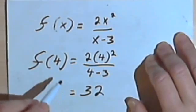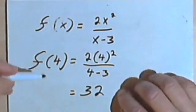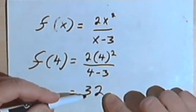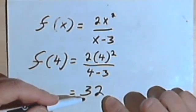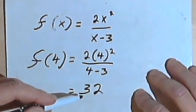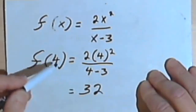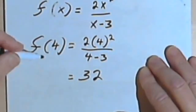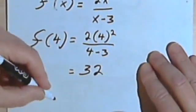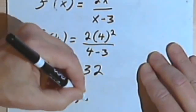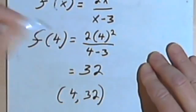Now, what you want to remember about this is the 4 is the input and the 32 is the output of the function. In other words, I could think of the input as an independent variable and the output as a dependent variable, and I could take this f of 4 equals 32 and I could also write it as an ordered pair, 4 comma 32.